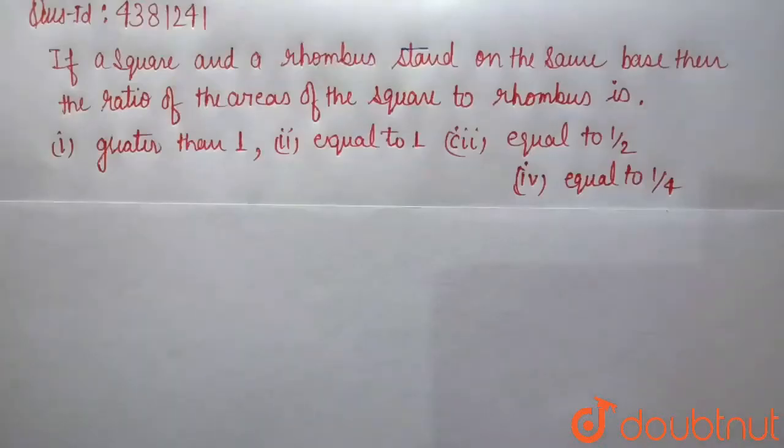Now our question is: if a square and a rhombus stand on the same base, then the ratio of the area of the square to the rhombus is option 1, greater than 1; second option, equal to 1; third option, equal to 1/2; fourth option, equal to 1/4.